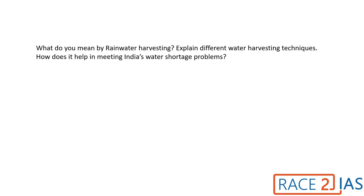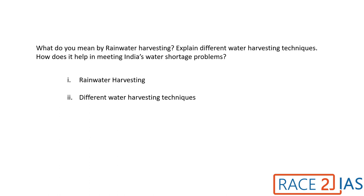Next question: 'What do you mean by rainwater harvesting? Explain different water harvesting techniques. How does it help in meeting India's water shortage problems?' In this one main question you have three sub-questions, which you can categorize as: explanation of rainwater harvesting, different water harvesting techniques, and how India tackles its water shortage problems. Under these three headings, use a direct point-wise approach rather than beating around the bush.